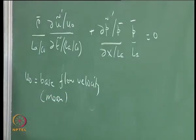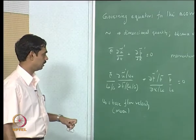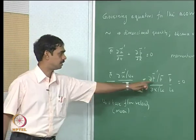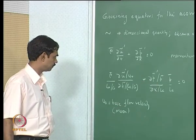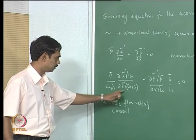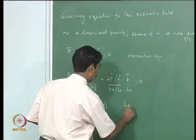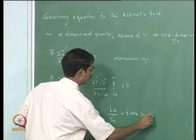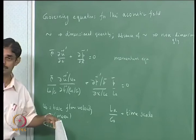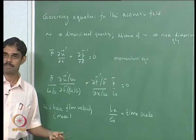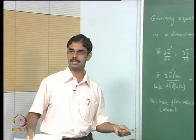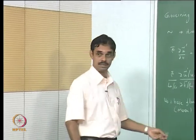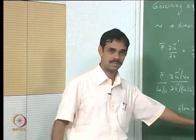We non-dimensionalize pressure with the atmospheric pressure, and L_a / C naught is a time scale. L_a is the length of the acoustic zone, and C naught is the speed of sound, which we pretend is constant. We have a constant C naught — that is what the subscript naught denotes. This time scale is the acoustic travel time across the tube.